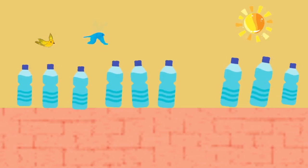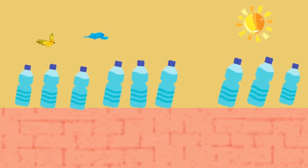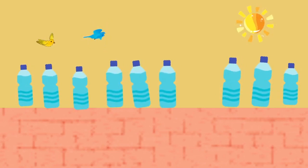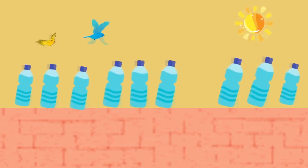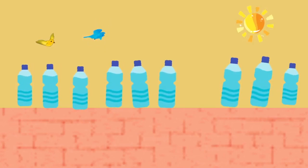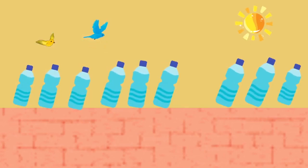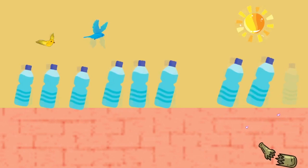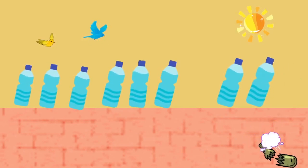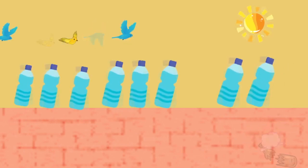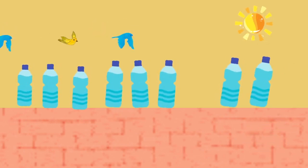Nine green bottles sitting on the wall, nine green bottles sitting on the wall. And if one green bottle should accidentally fall, there'll be eight green bottles sitting on the wall.